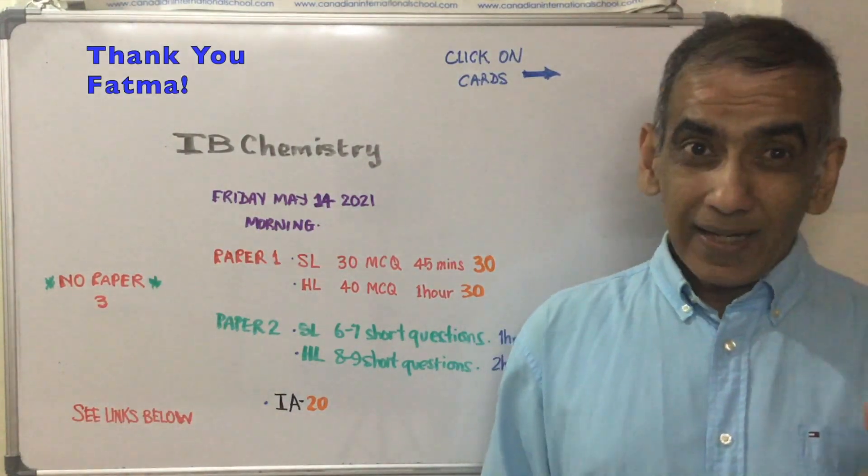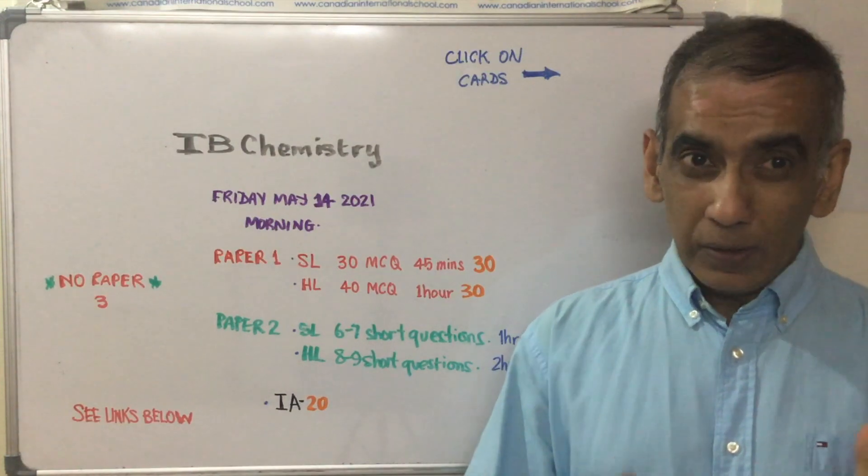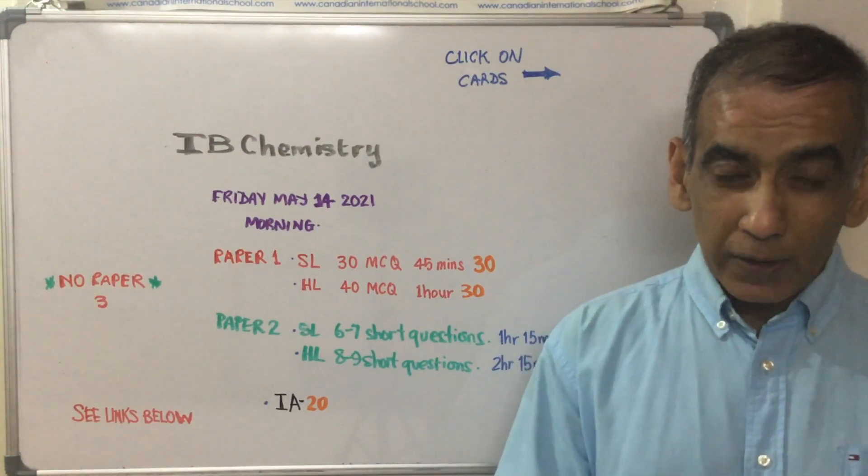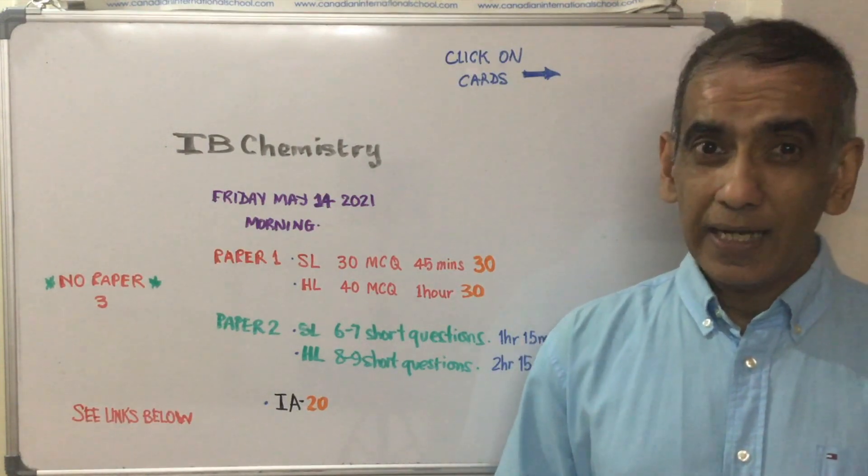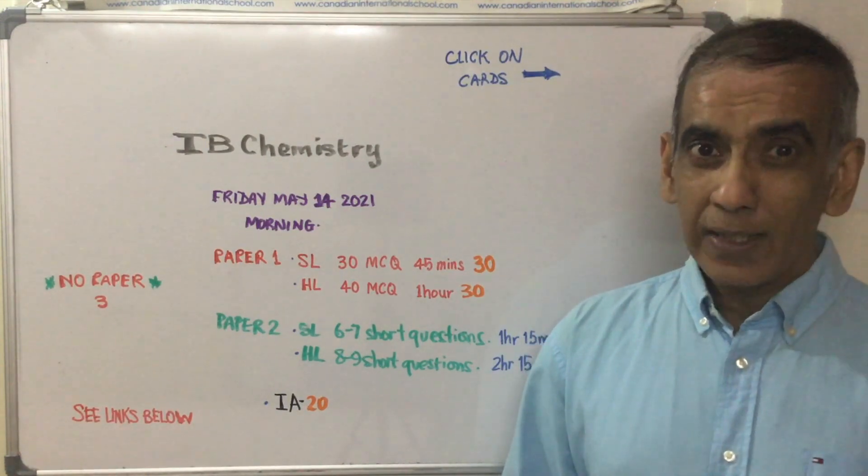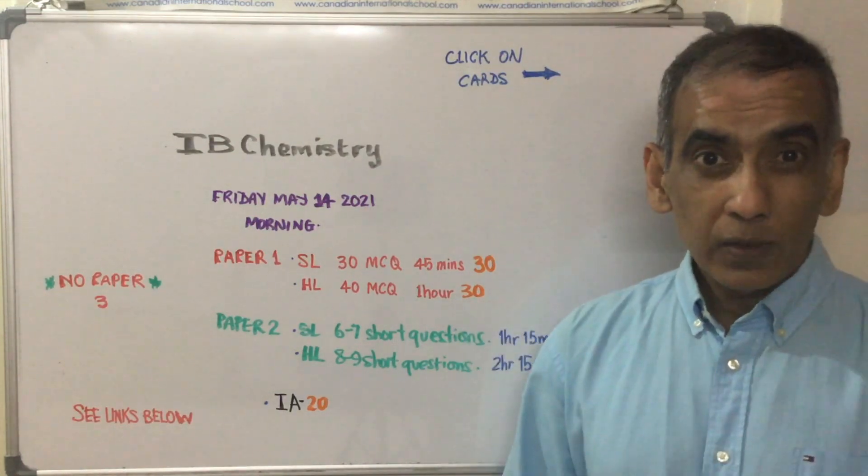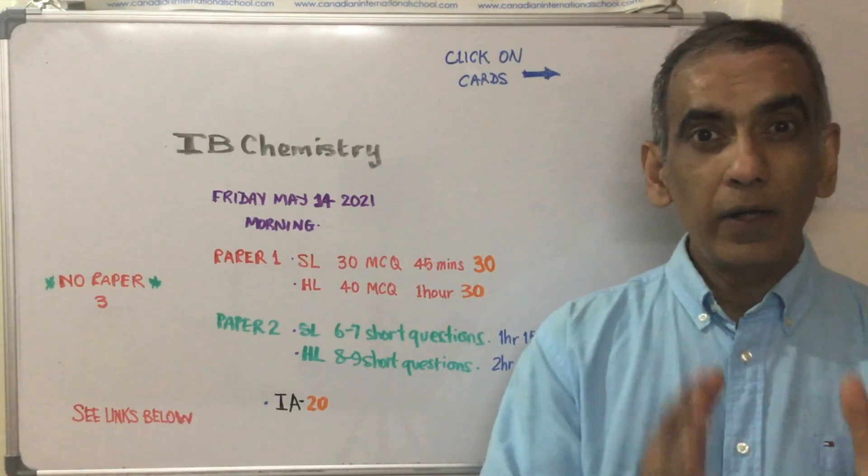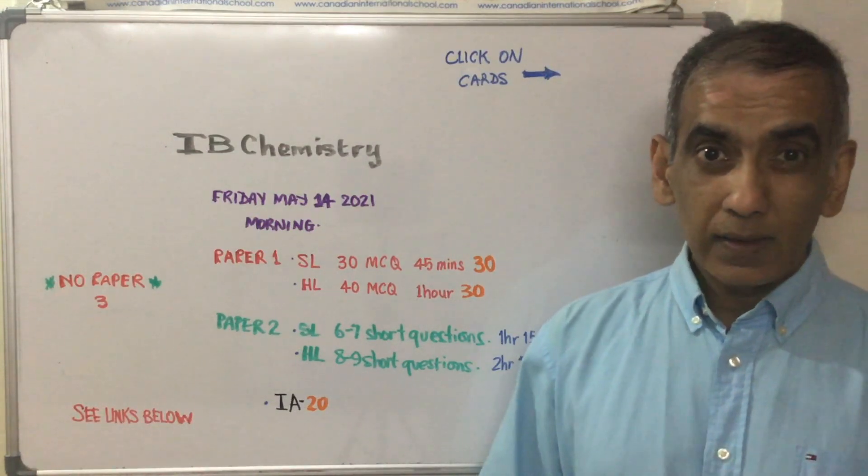Hello and welcome again. The IB Chemistry exam for May 2021 - you might be wondering if it's actually going to happen and the answer is yes. It's very likely to happen and it's already scheduled for Friday the 14th of May 2021, just about 144 days from today, the 22nd of December.